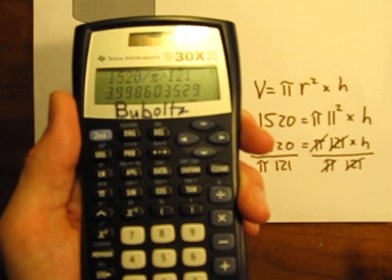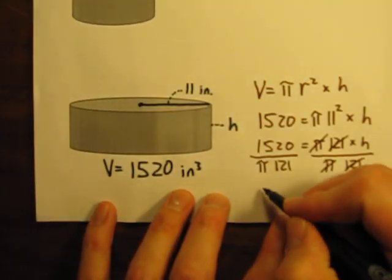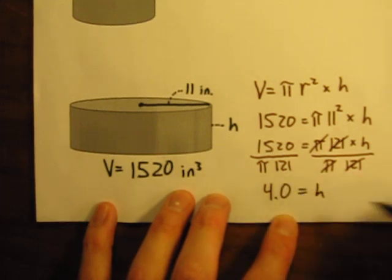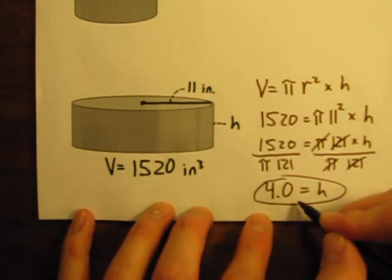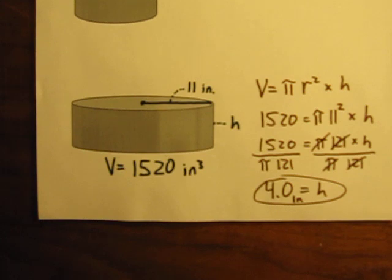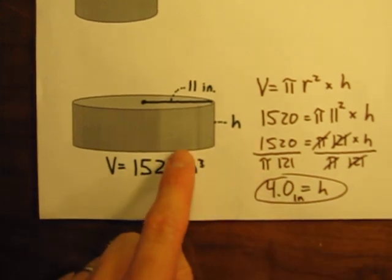That is very, very close to 4. So I'm going to say, in this case, h is approximately equal to 4. And I should label my units here. This is in inches. So h is 4 inches high. The height of this cylinder is 4 inches.